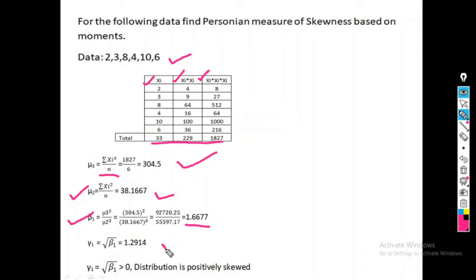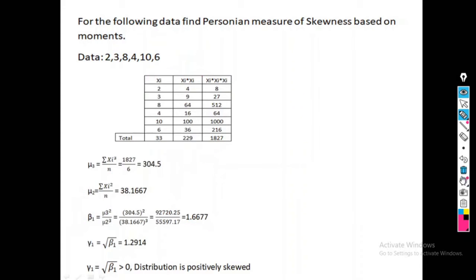Gamma 1 is the square root of beta 1, so gamma 1 equals the square root of 1.6677, which gives a final answer of 1.2914. This value is greater than 0, therefore the distribution is positively skewed.